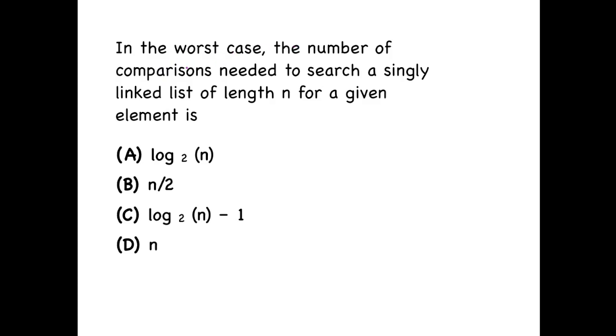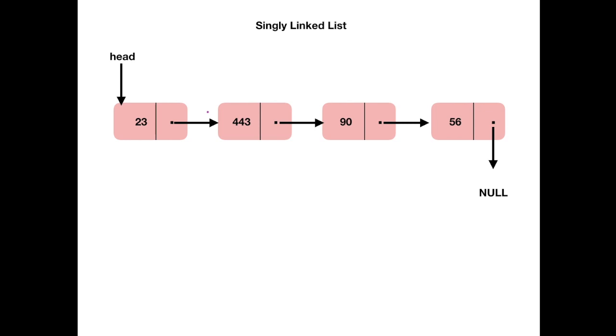In the worst case, the number of comparisons needed to search a singly linked list of length n for a given element is... So this is a singly linked list with length 4, so n equals 4 in this case.